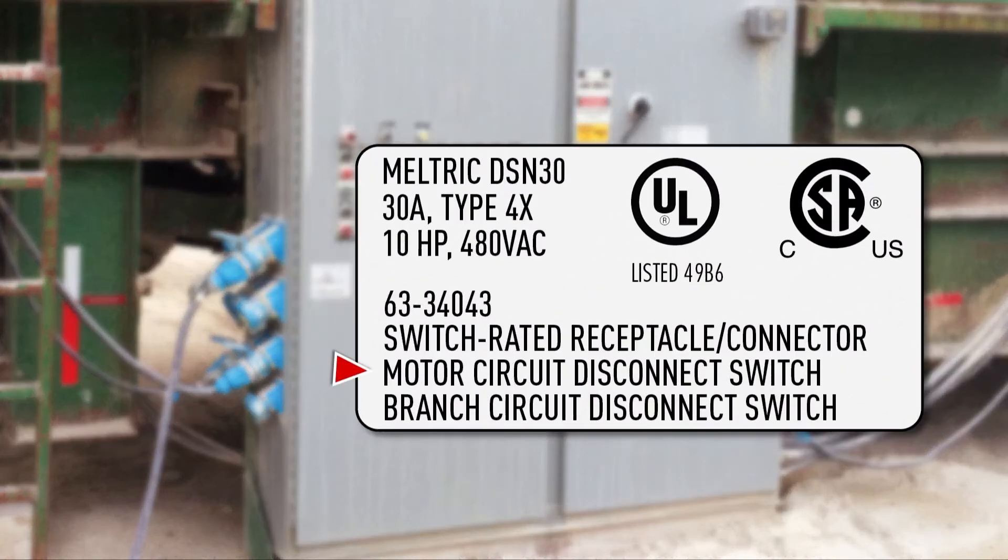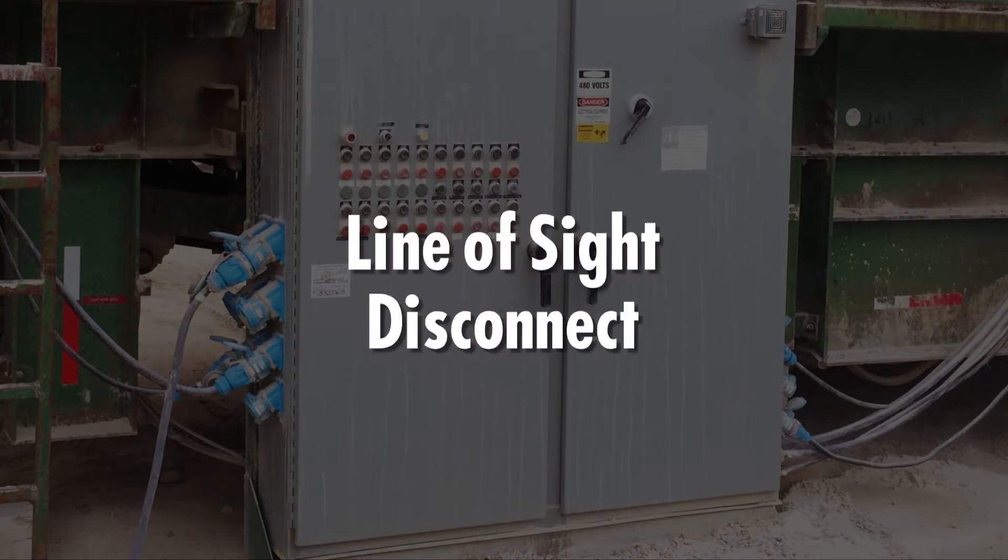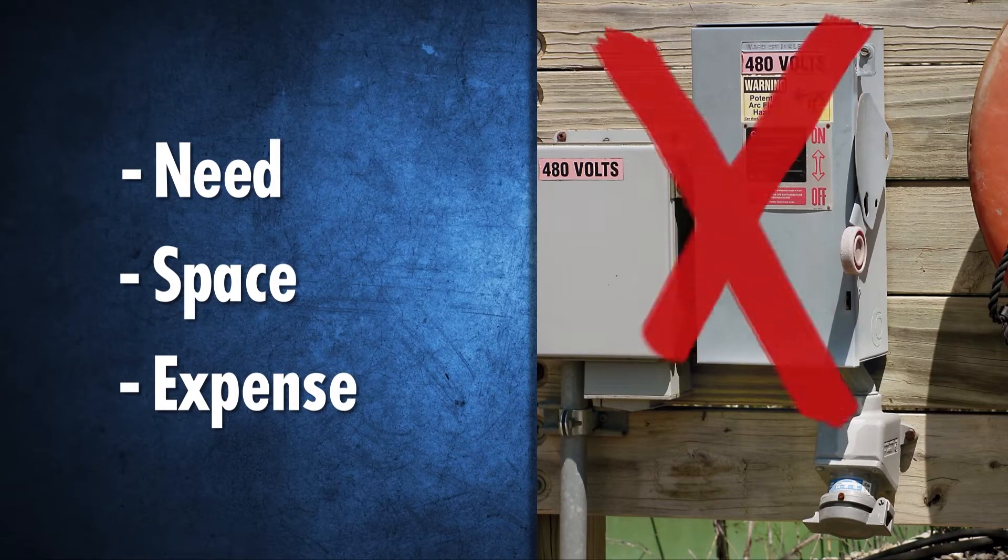UL and CSA motor circuit and branch circuit disconnect switch ratings shown on the device label allow them to function as the code required line-of-sight disconnect, so the need, space, and expense of a separate non-fused disconnect switch is eliminated.